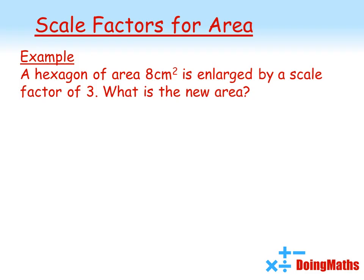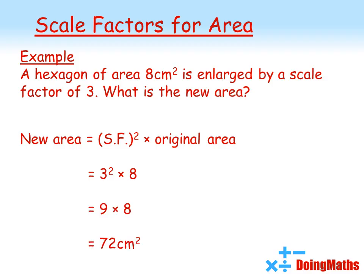Let's try this in an example. If you have a hexagon of area 8 square centimeters and you enlarge it by a scale factor of 3, what is the new area? Scale factor of 3, each of the sides would be getting three times bigger. But we know the new area requires us to square the scale factor. So 3 squared times 8 gives us 72 square centimeters.